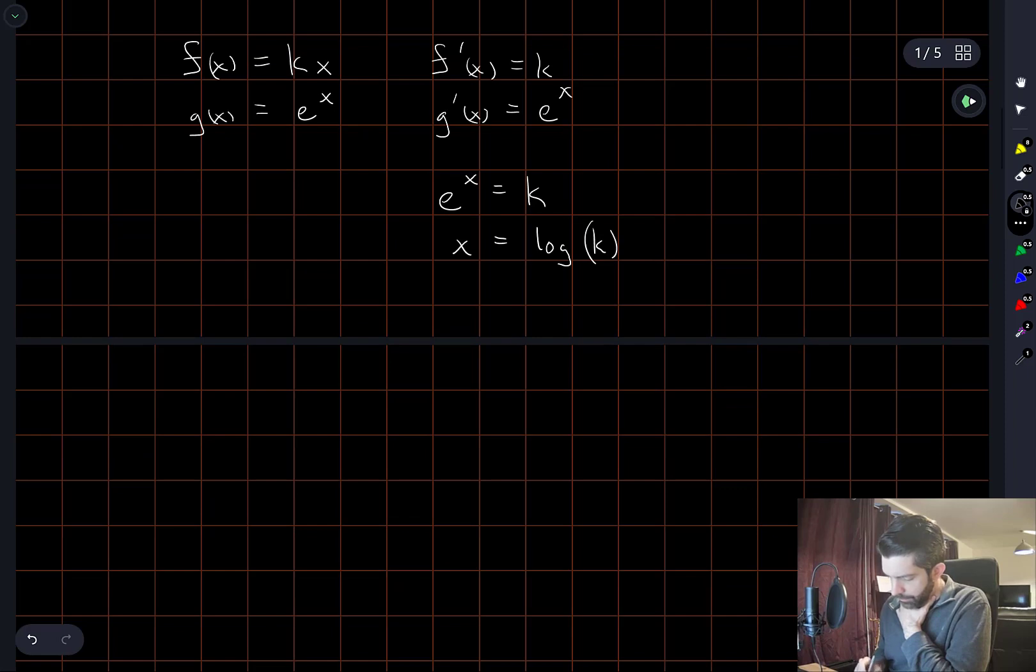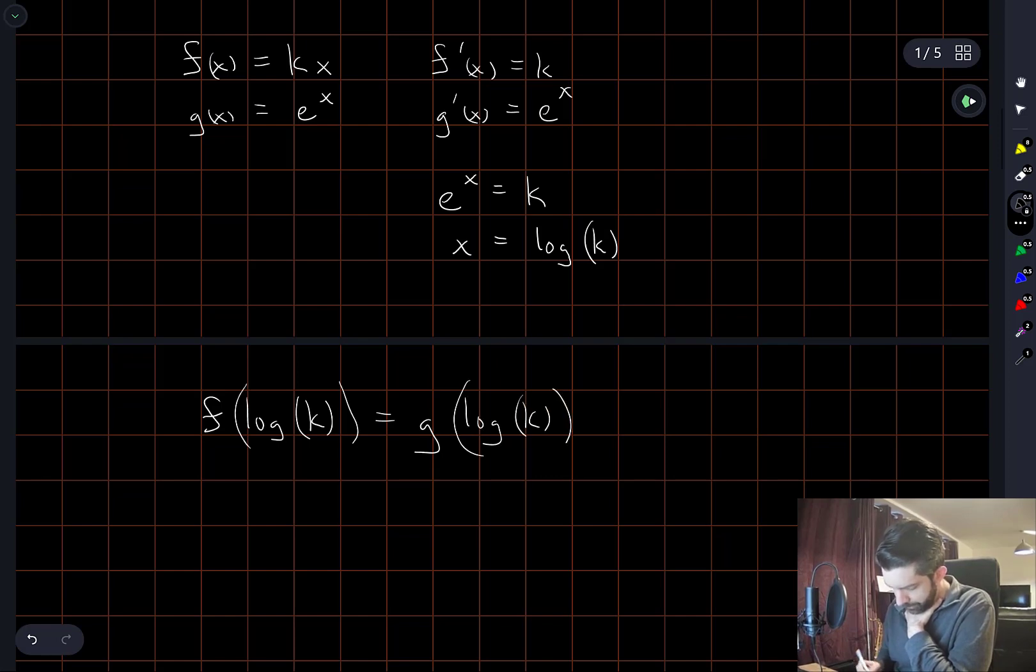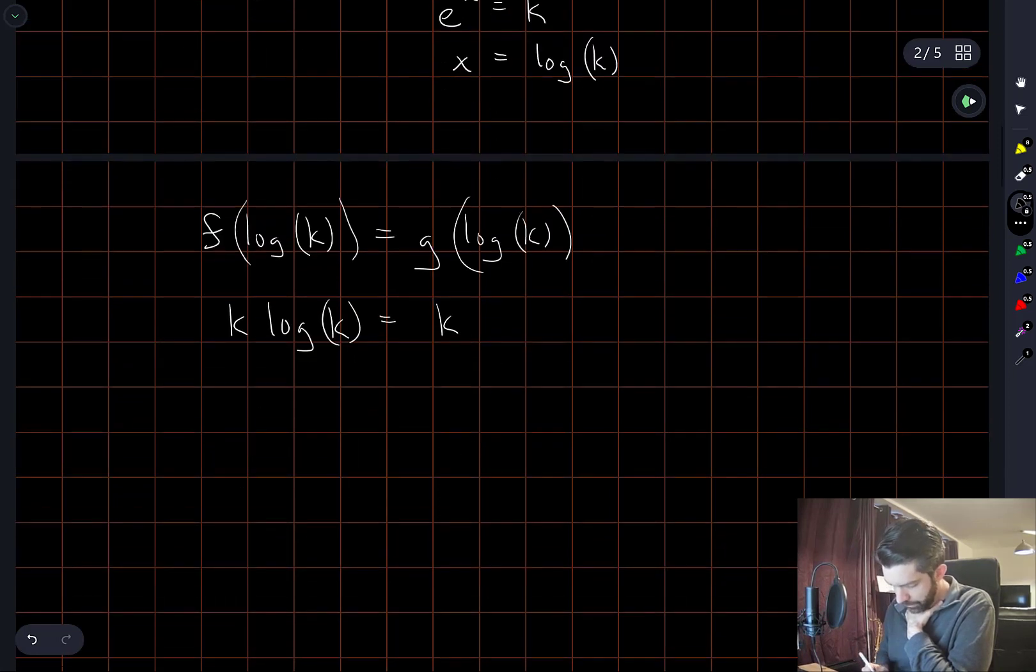So then what I want is when x is equal to log k, I need the original two functions to be equal. So we want f of log k to be equal to g of log k. F of log k is just k log k. G of log of k is just k. So this gives us log of k is equal to 1, and so k is equal to e.